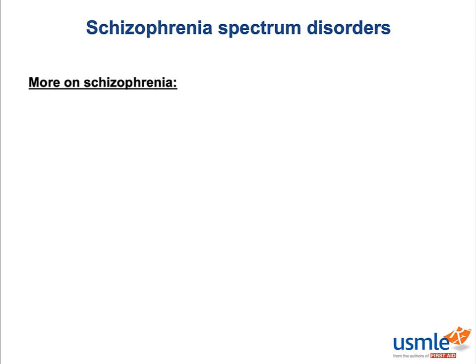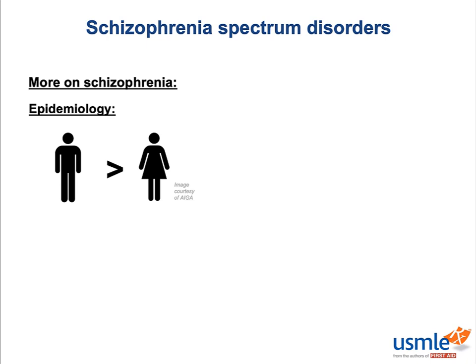While a lot of the psych disorders tend to disproportionately affect women, with schizophrenia it's really men that get the short end of the stick. Not only does schizophrenia have a slight male predominance, it also has a reliably earlier onset in men — usually late teens and early twenties in men, and twenties to thirties in women.